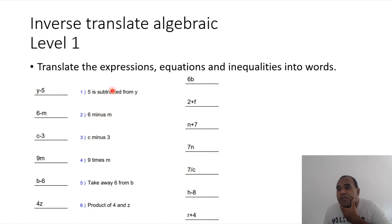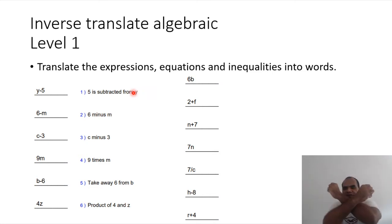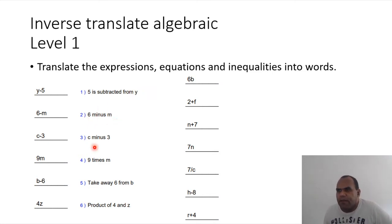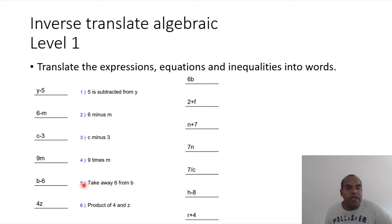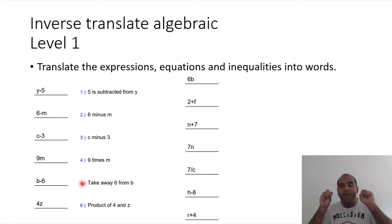Answer key number one: '5 is subtracted from y' — as you can see, that's a turn-around phrase. Number two: 6 minus m. Number three: c minus 3. Number four: 9 times n. And for b minus 6: 'take away six from b' — as you can see, 'take away' is the idea for subtraction.